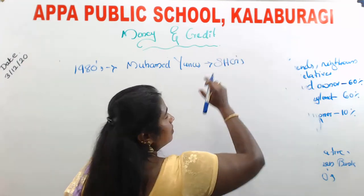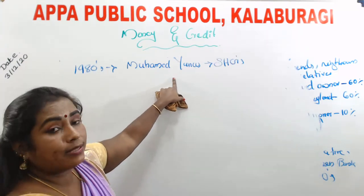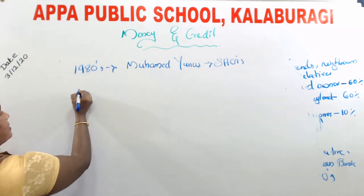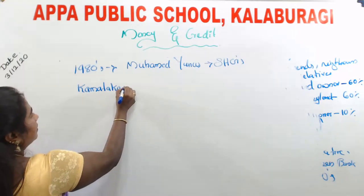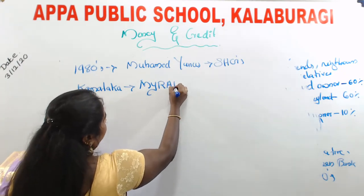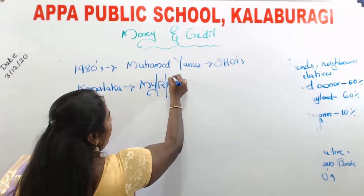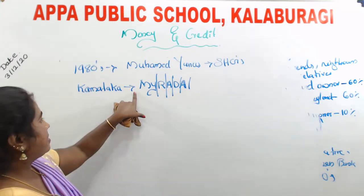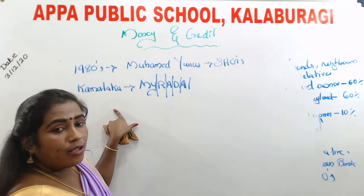Later, SHGs were introduced in India, first in Karnataka. The name of the first SHG in India is MYRADA — Mysore Resettlement and Development Association. This was the first SHG formed in India, in Karnataka. Now, almost 2.2 million SHGs are available in India, and more than 33 million women and men are working in SHGs.